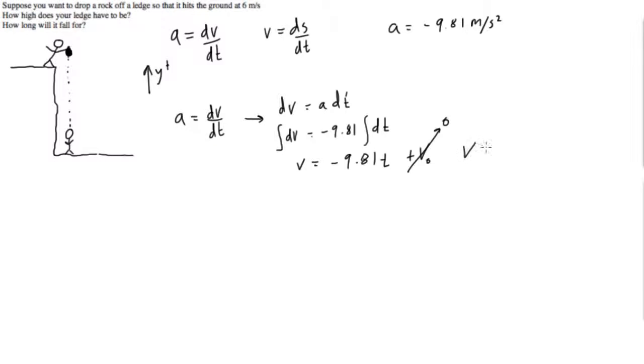So we can say right away that this is going to be cancelled and goes to zero, so we will have v is equal to negative 9.81 t. Cool.